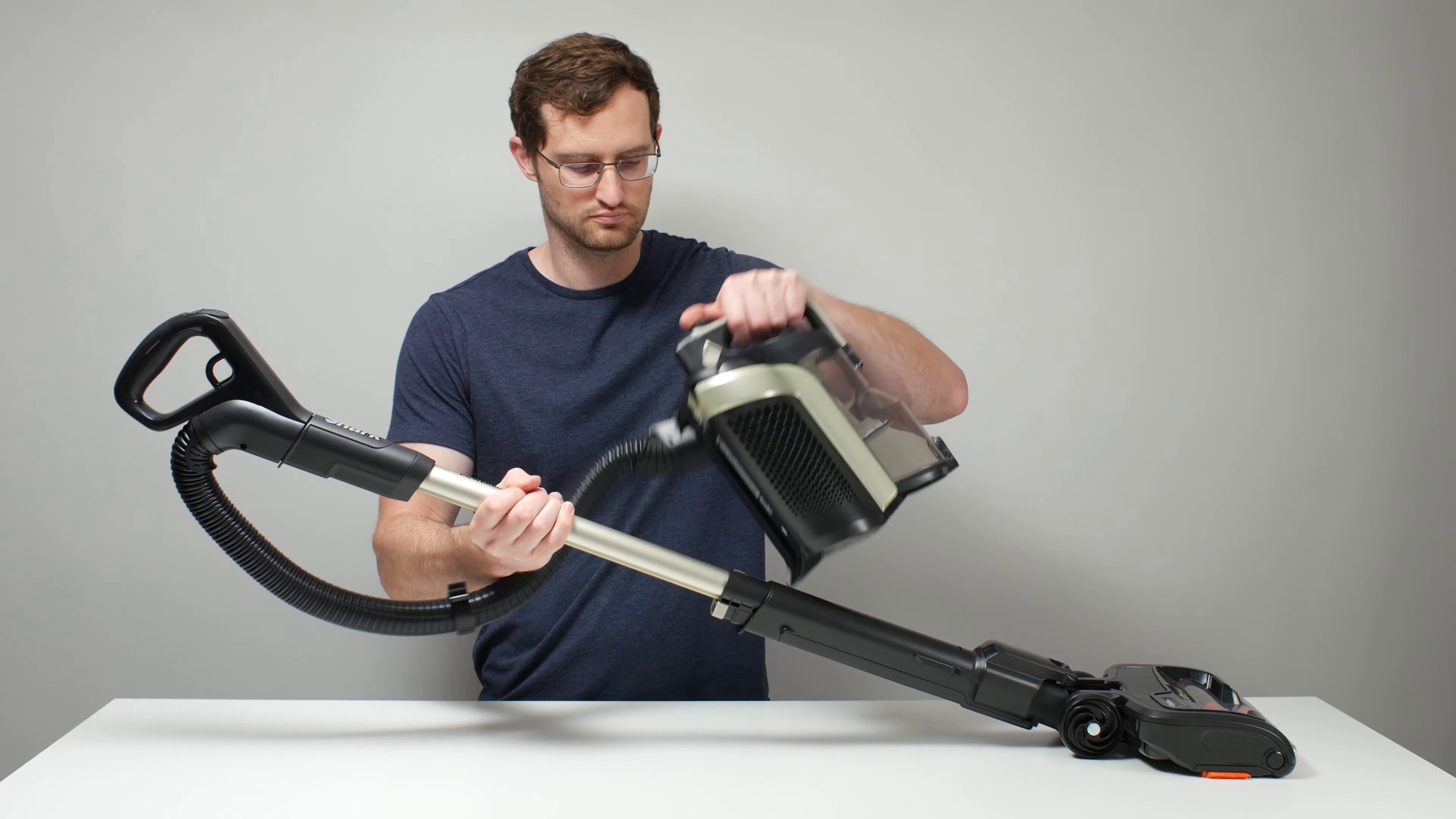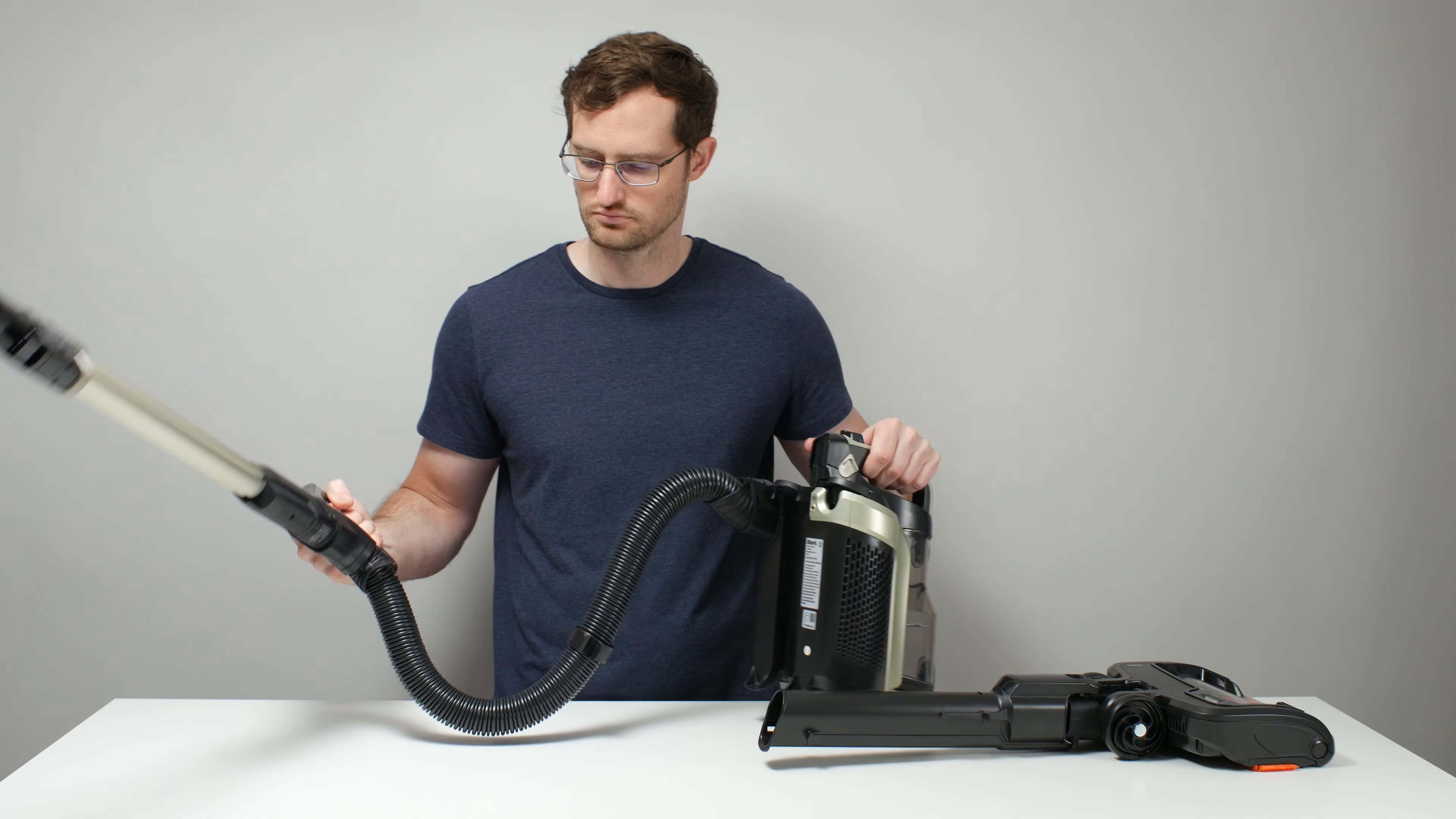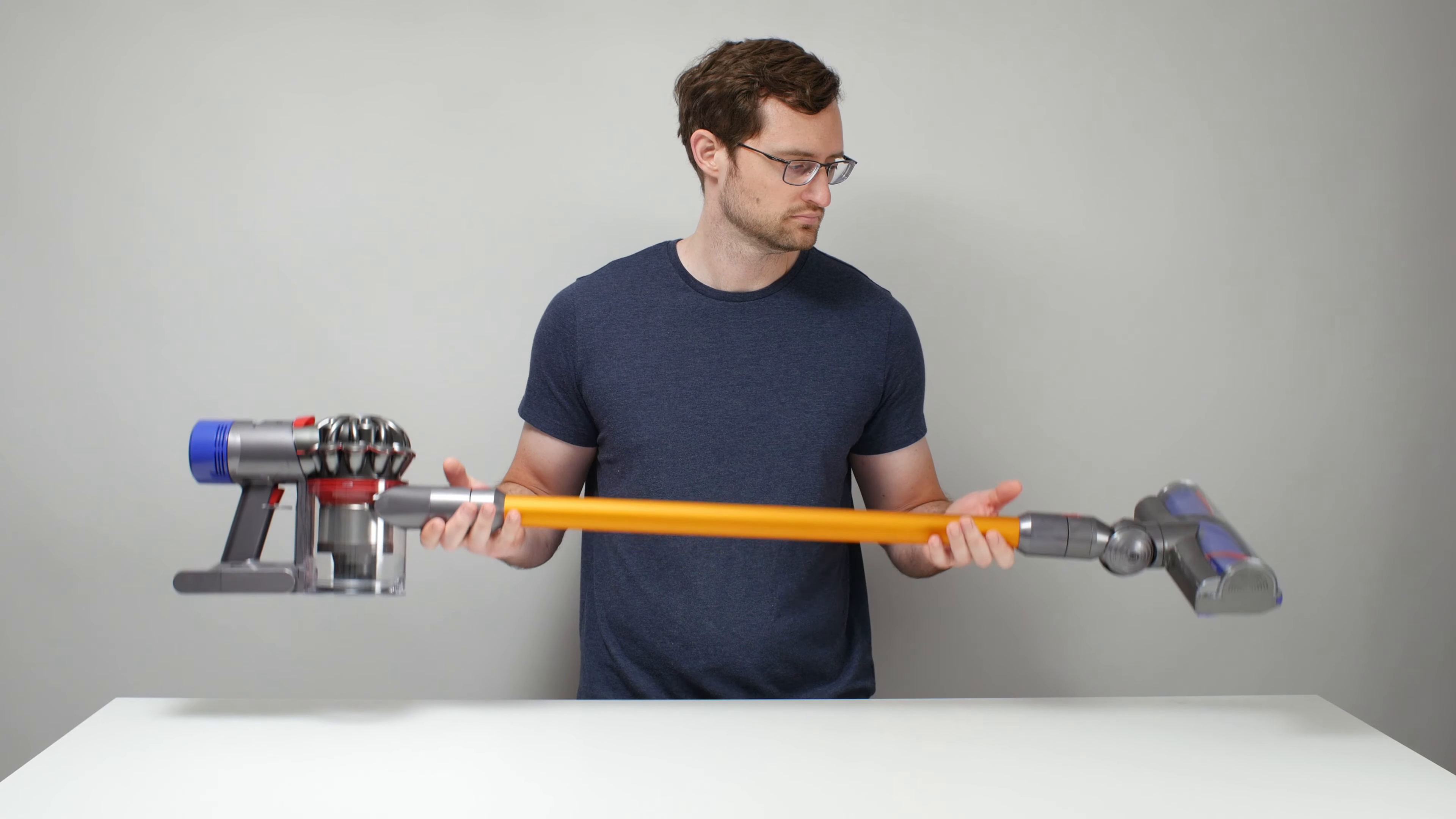The bottom line is that the lift-away feature may very well have been a great feature to have back when vacuums had to be larger in size with super heavy bodies and larger cleaner heads, but it's really not a useful feature to have when modern cordless vacuums are already very light and compact as a complete package.